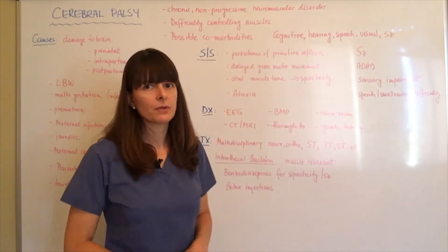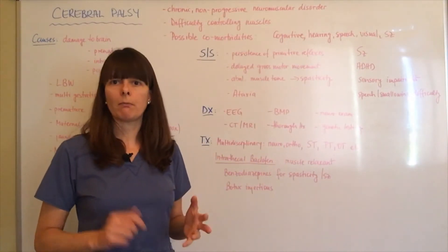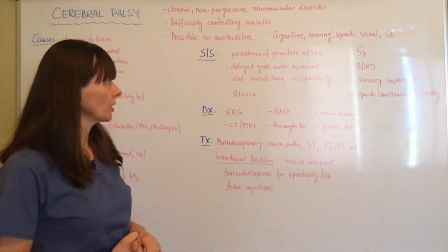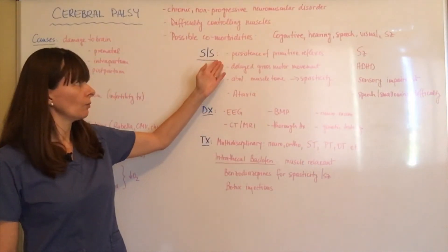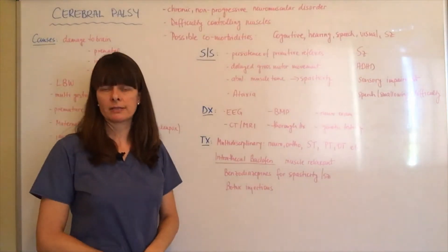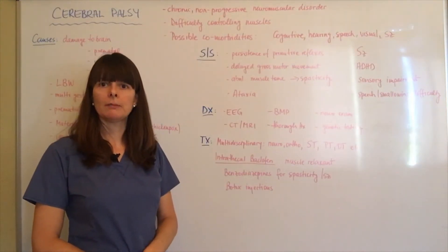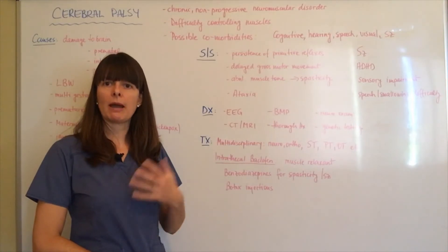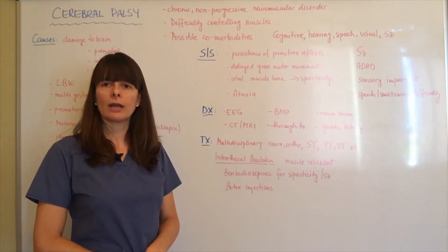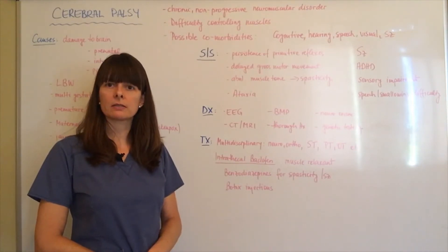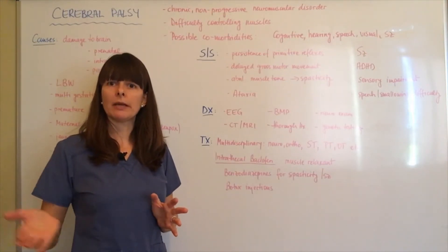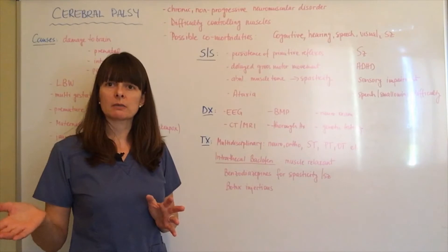Signs and symptoms of cerebral palsy can range from mild to pretty severe, and are usually neuromuscular. Initially, it might be detected by the persistence of primitive reflexes — so the rooting reflex or the palmar grasp reflex may persist past their normal time period. Those primitive reflexes that we typically assess for in newborns are present, but then maybe at three, four, or six months, they persist.